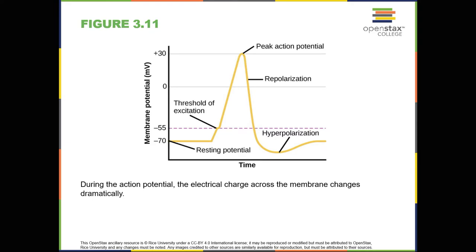Think of it like sending an email or a text message. You can think about sending it all you want, but the message isn't sent until you hit the send button. Furthermore, once you send the message, there's no stopping it. Because it is all-or-none, the action potential is created, or propagated, at its full strength at every point along the axon. Much like the lit fuse of a firecracker, it does not fade away as it travels down the axon. It is this all-or-none property that explains the fact that your brain perceives an injury to a distant body part, like your toe, as equally painful as one to your nose.